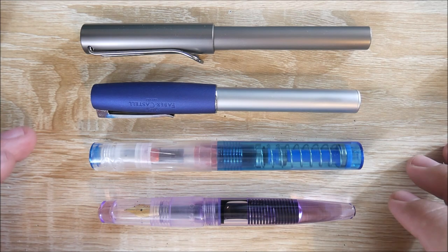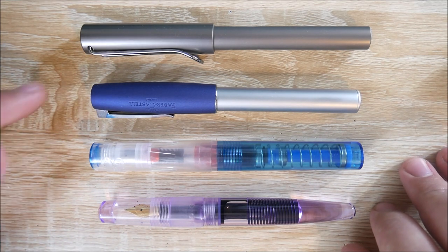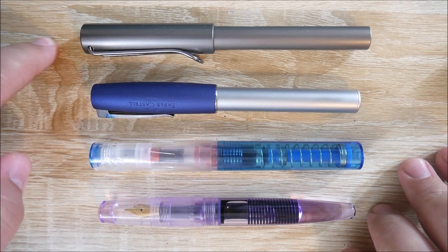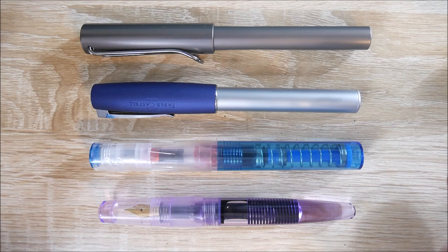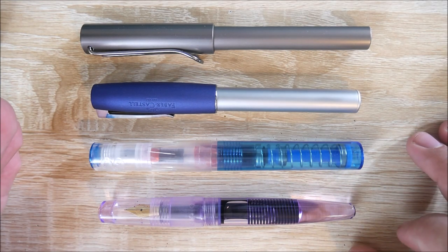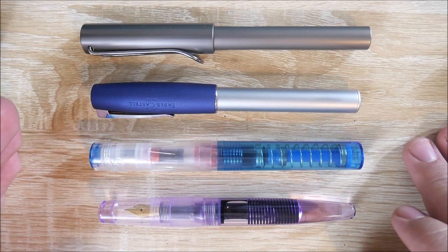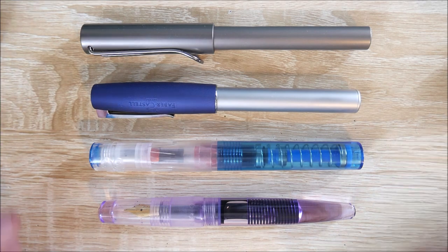Here it is next to some other entry level fountain pens. At the bottom we have the C2, then the Twsbi Go, Faber-Castell Loom, and the Lamy LX. You can see it's a little bit shorter than all of these. It's very close to the Faber-Castell Loom, it may actually be the same size, but definitely shorter than the Twsbi Go and the Lamy LX when capped.